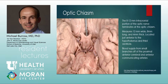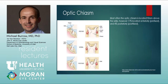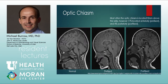The optic chiasm is where the 8 to 12 millimeter intracranial portion of the optic nerve terminates. It measures approximately 12 millimeters wide, 8 millimeters long, and 4 millimeters thick, located anterior to the hypothalamus and third ventricle. Its blood supply comes from small branches off the proximal anterior cerebral and anterior communicating arteries. Regarding location relative to the sella: most (approximately 79%) are superior — about 10 millimeters above the sella — but 17% are prefixed (anteriorly located) and 4% are postfixed (posteriorly located).